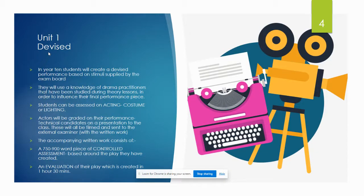Unit 1 is the devised piece of work and is worth 40% of the GCSE. Students are given a stimulus from the exam board and in small groups create a short play. Students can be assessed on either performance or the technical aspects, which includes lighting and costume.